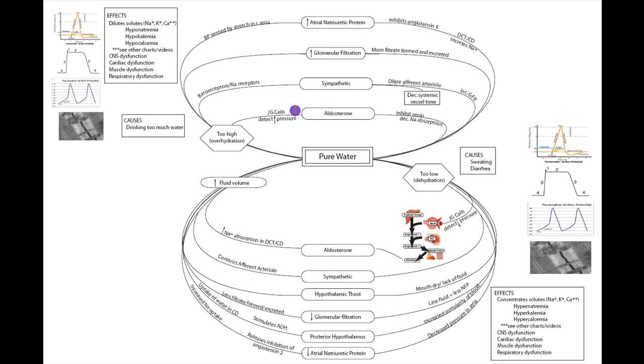Aldosterone technically is going to sense an increased pressure and decrease renin, decrease aldosterone, and that's going to decrease sodium absorption, but that's not really our issue. We already have hyponatremia. The sympathetic nervous system technically wants to sense sodium concentration, so that's not going to be real accurate, but it might dilate the afferent arteriole and decrease systemic vessel tone. That's going to increase GFR to help us get rid of this fluid.